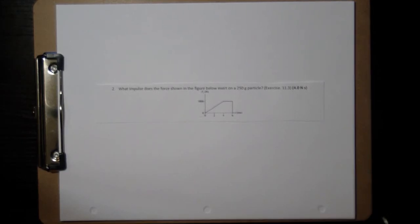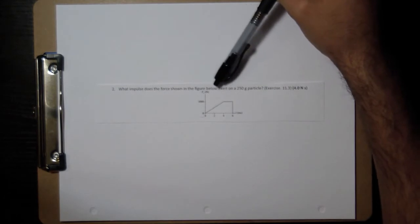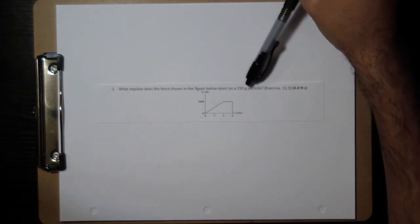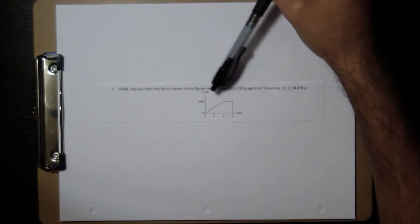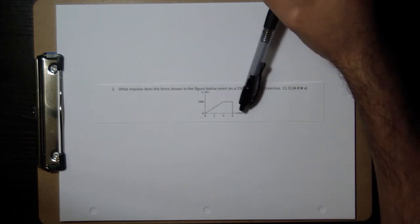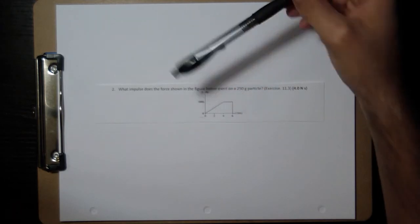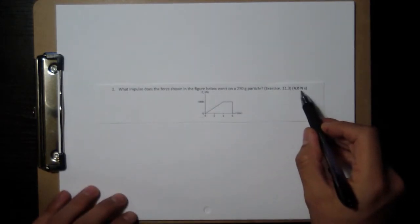Okay, let's look at problem number two. I'll read it. What impulse does the force shown in the figure below exert on a 250 gram particle? And it gives a graph of force versus time. Notice that the force is in Newtons, so that's SI units, but the time is in milliseconds. So we're going to have to convert that into seconds to get the right units.